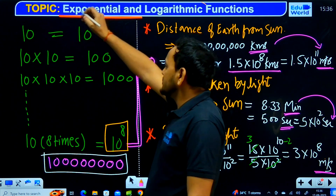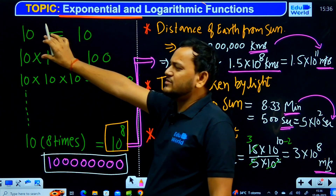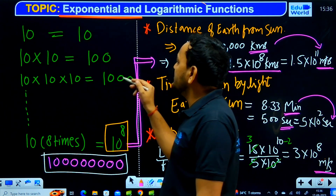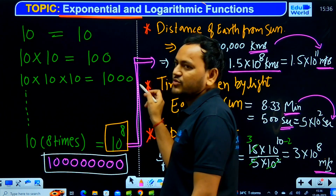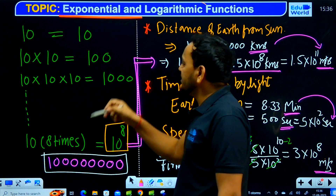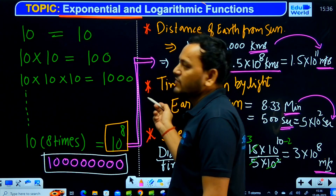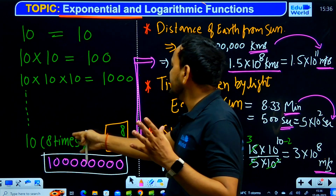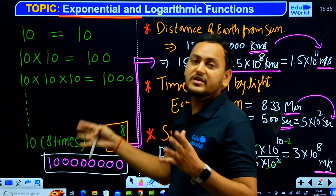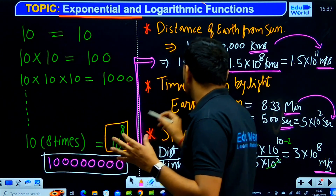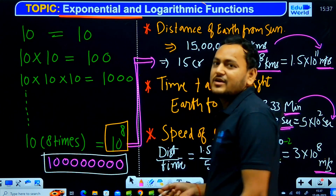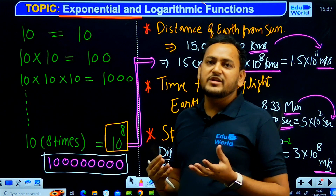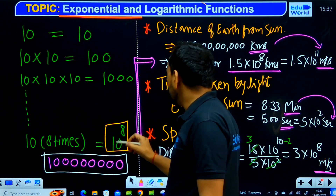Let's suppose we have the number 10. To represent 10, we write 10. If this number is multiplied by 10 times 10, we write 100. If 10 times 10 times 10, we write 1000. But as the numbers get very big — multiplied 8 times, 10 times, 20 times — we end up writing many zeros. So we have an easy way to write it: we represent it in powers and exponents.